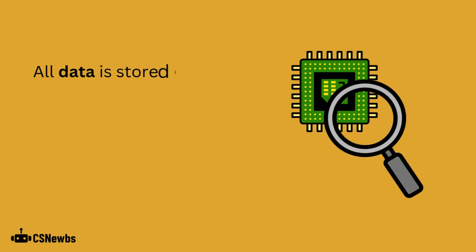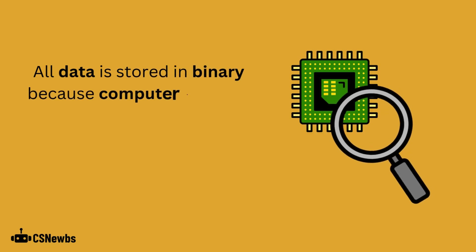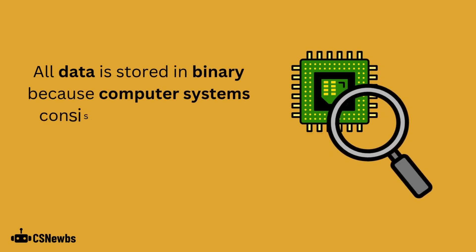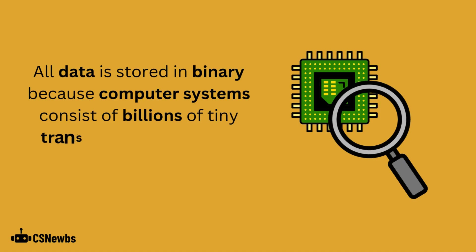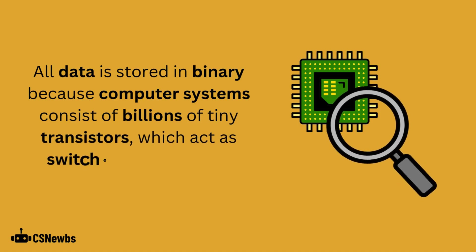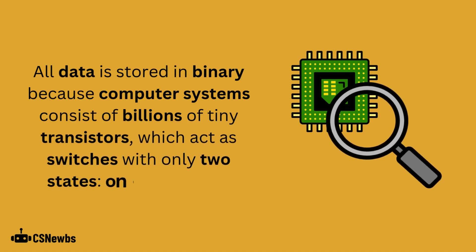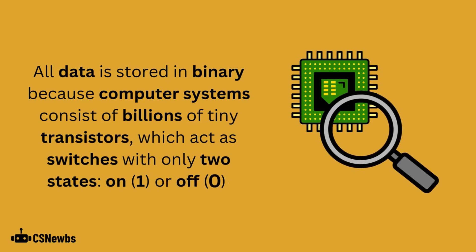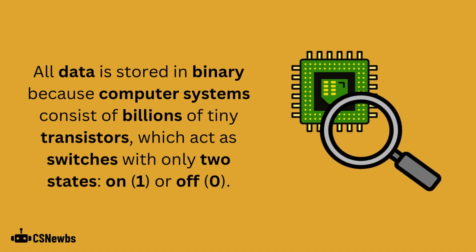All data is stored in binary, because computer systems consist of billions of tiny transistors which act as switches. These switches have two states: on, which is represented as 1, and off, which is represented as 0.